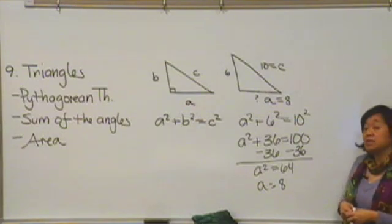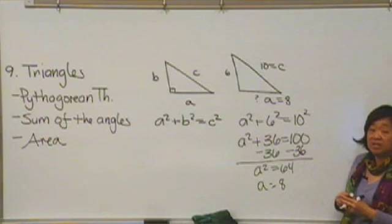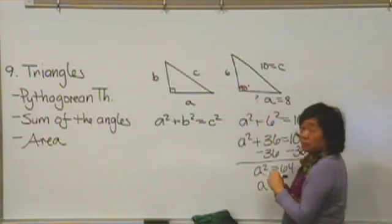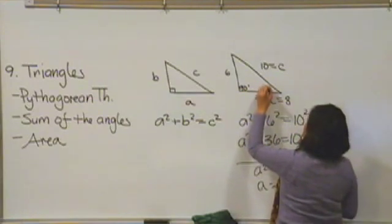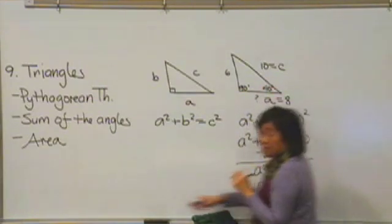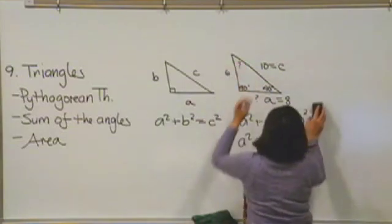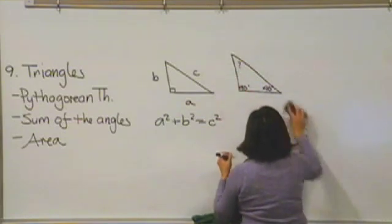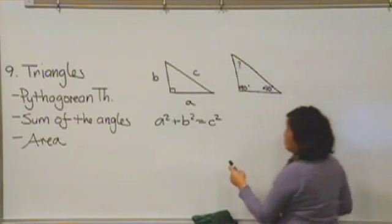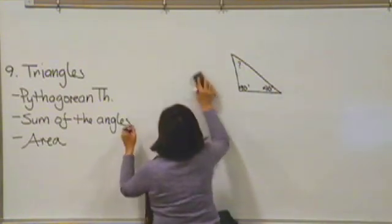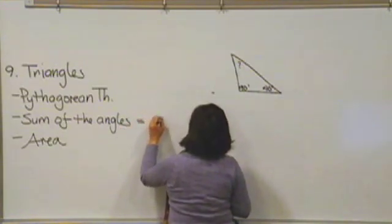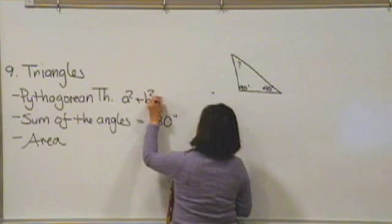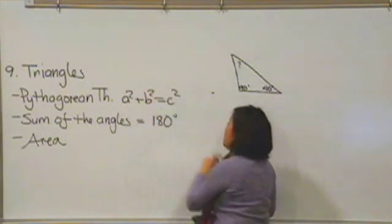A second fact about triangles that I want to remind you about is the sum of the angles. So for example, if this is 90 because it's a right angle, and this is 40, I'm just making that up, we should be able then to find out what that is equal to. So the second thing I'd like to remind you about is that whenever you're working with a triangle, the sum of the angles is always 180 degrees.